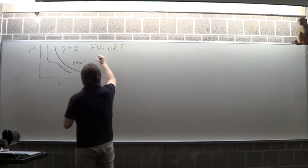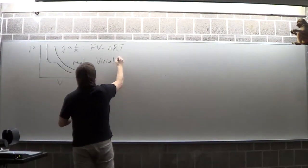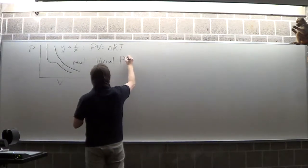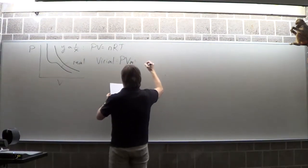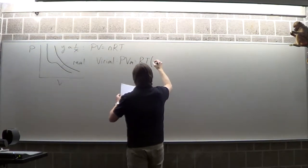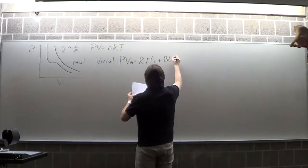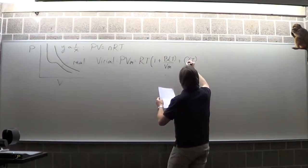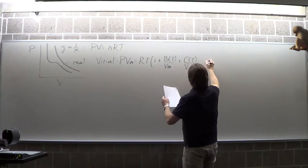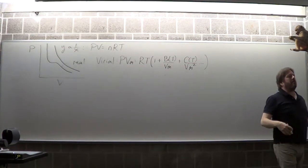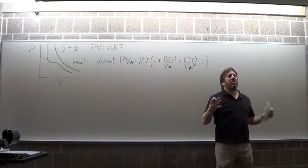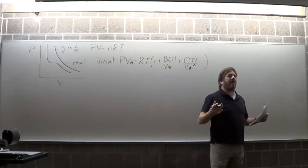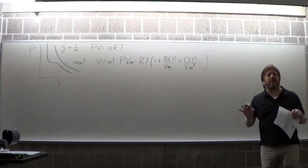One of those equations is the virial equation. I haven't had you do much with the virial, and I don't recall if it's on the test. I tend to use it as a tool for simple questions — like, tell me the units of the C coefficient, or what's dP/dT for the virial equation. It's just a little tool I use for simple questions.